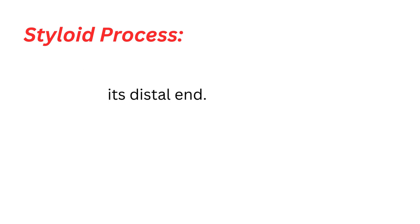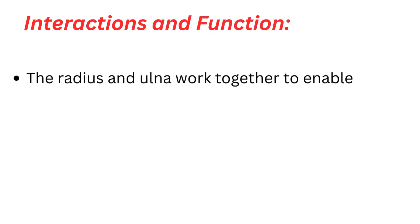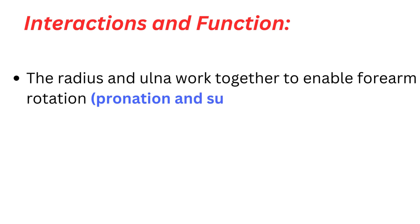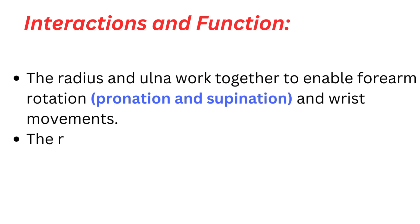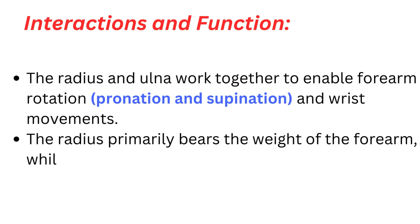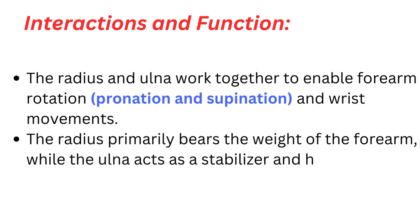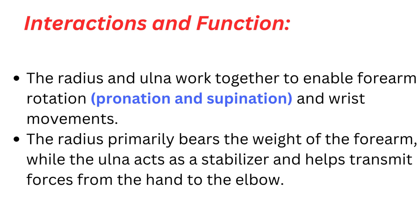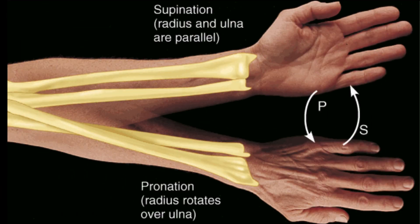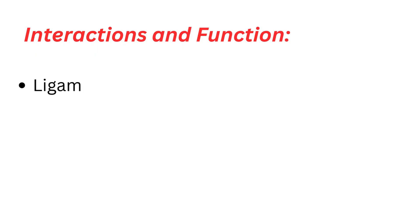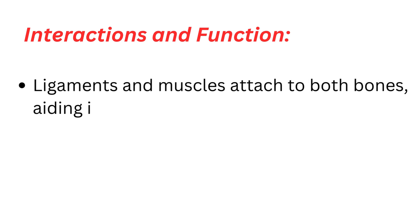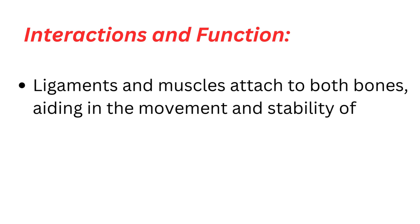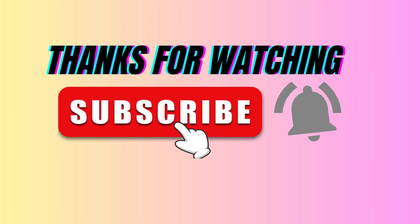Interactions and function: the radius and ulna work together to enable forearm rotation and wrist movements. The radius primarily bears the weight of the forearm, while the ulna acts as a stabilizer and helps transmit forces from the hand to the elbow. Ligaments and muscles attached to both bones aid in the movement and stability of the forearm and wrist.